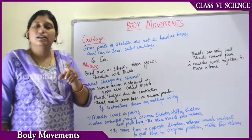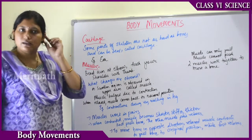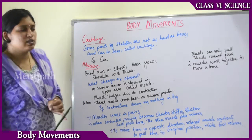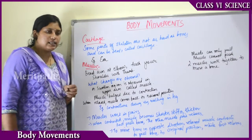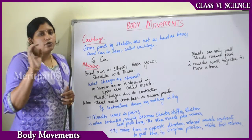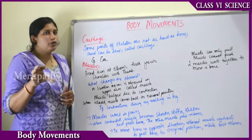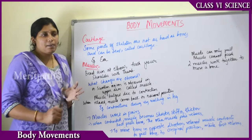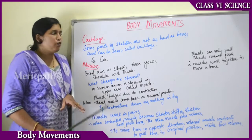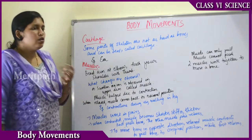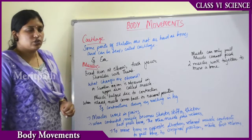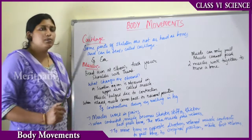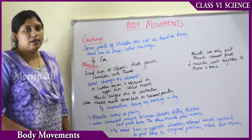Cartilage is mainly situated in the ear. We can easily bend the ear in many directions and it is very soft in consistency. The nose also has some part made up of cartilage, and some parts of the skeleton are also made up of cartilage. Cartilage is a soft structure which can be easily bent, and it also helps in body movement.